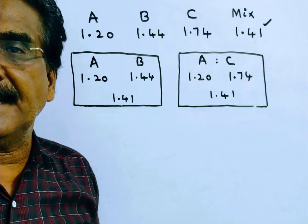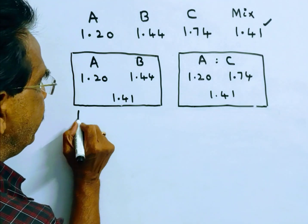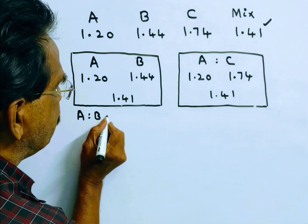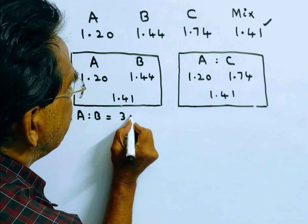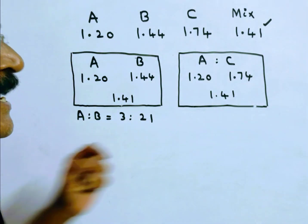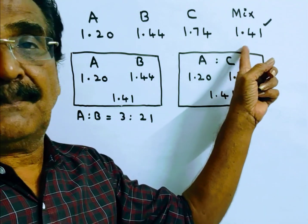A is to B is equal to this minus this by this minus this, that is 3 is to 21. Again, friends, this worth price 1.41 lies between A and C.